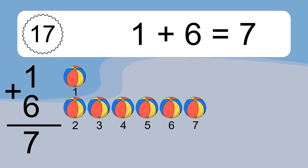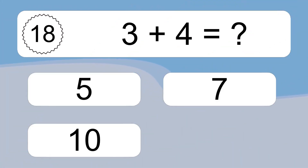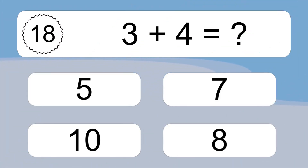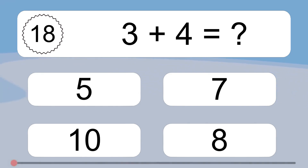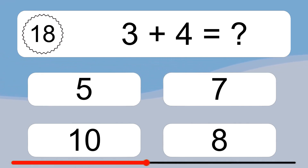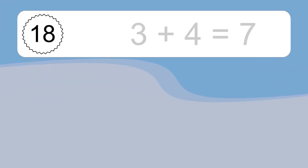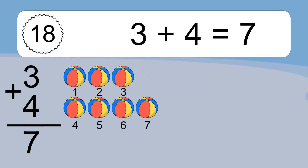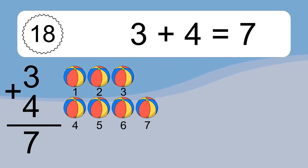Let's count it: 1, 2, 3, 4, 5, 6, 7. Let's count it: 1, 2, 3, 4, 5, 6, 7.